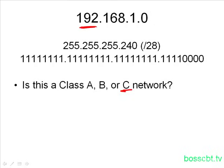192 falls within the class C network range. Now that's important because we know a class C network has a default subnet mask of 255.255.255.0, which means the first three octets are dedicated to the network portion. And we know in subnetting, the network portion never changes.